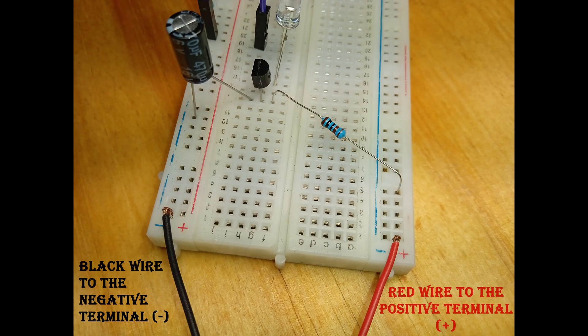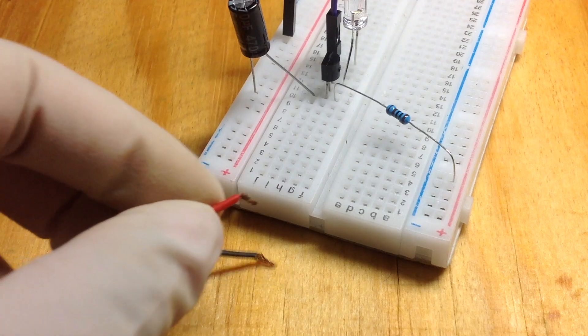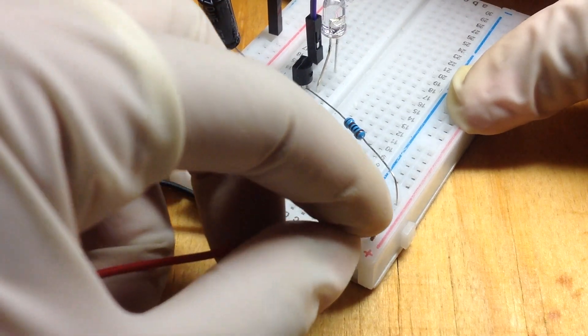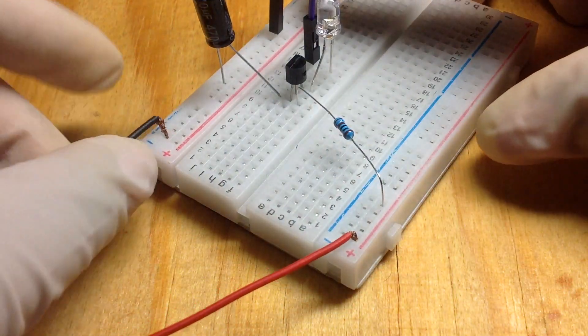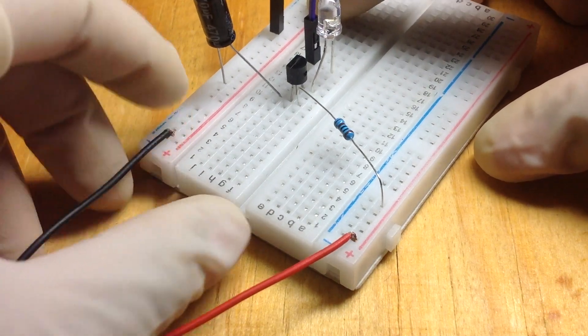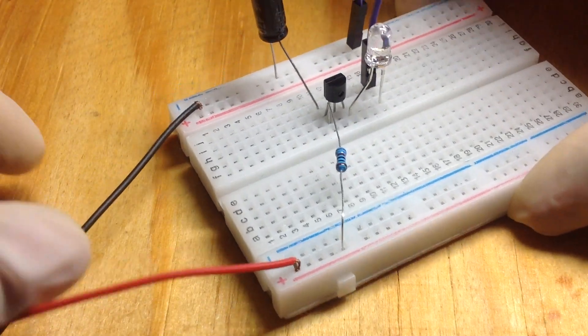Now, get a 12V power supply and connect the red wire, which is the positive wire, to the positive terminal of the breadboard and the black wire, which is the negative wire, to the negative terminal of the breadboard.